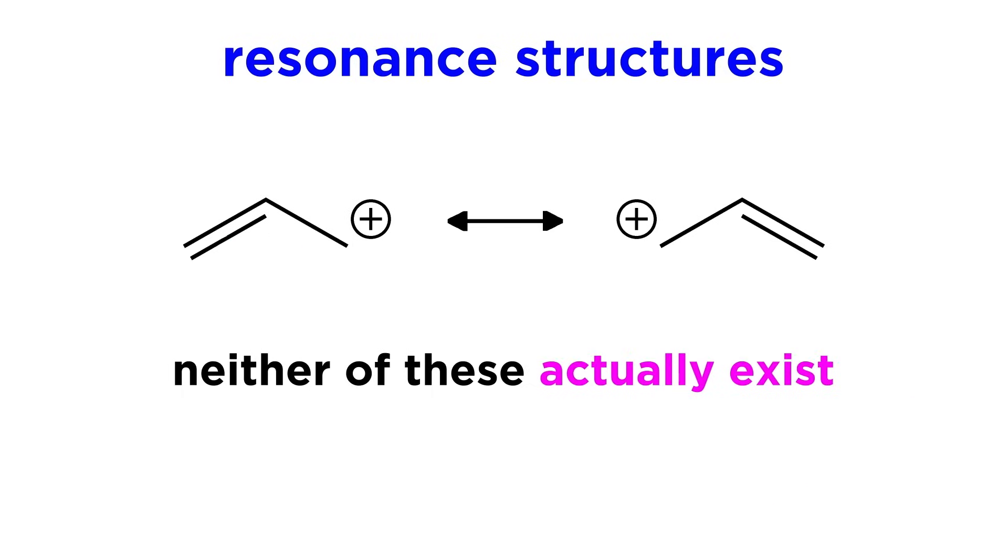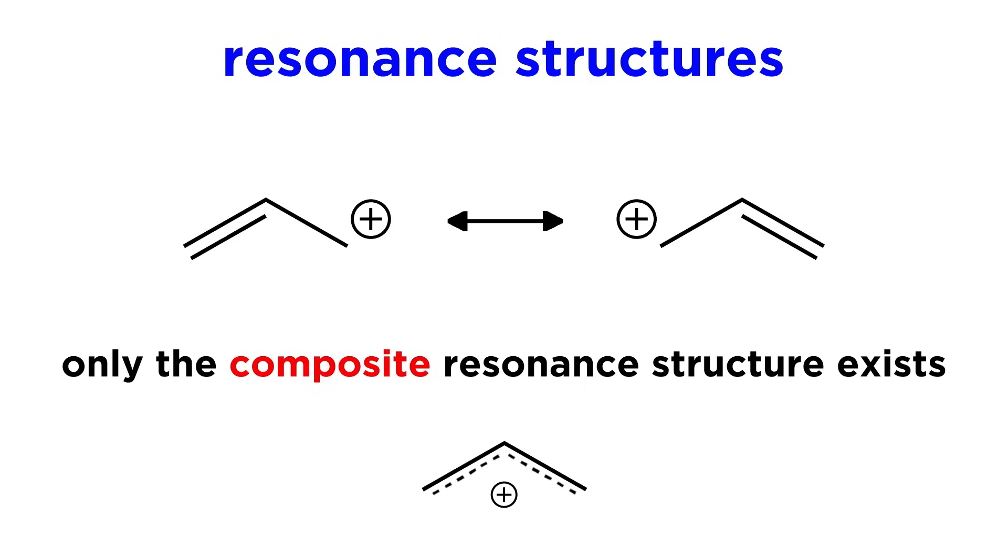Now once again, remember that neither structure truly exists. Instead we have to look at the composite, which will show partial pi electron density all along this portion of the molecule, and therefore a delocalized positive charge.